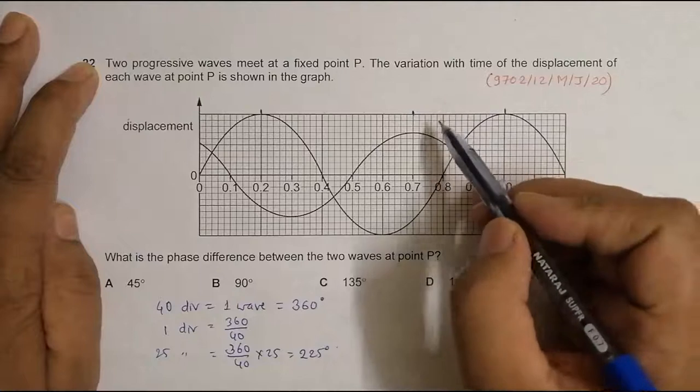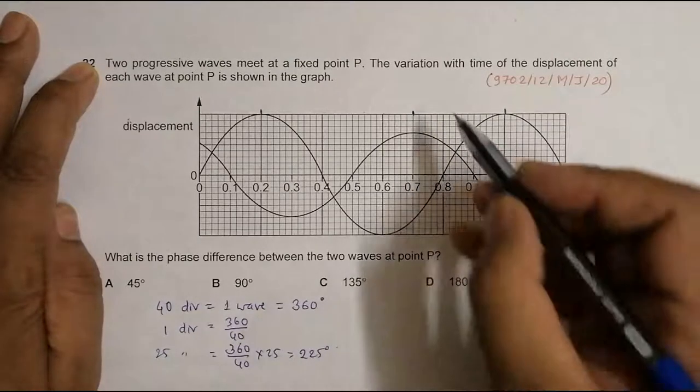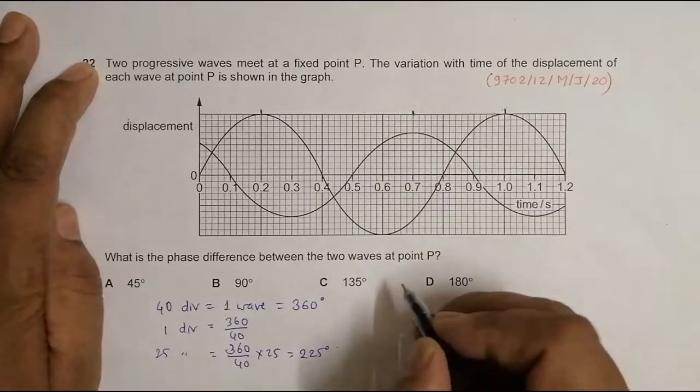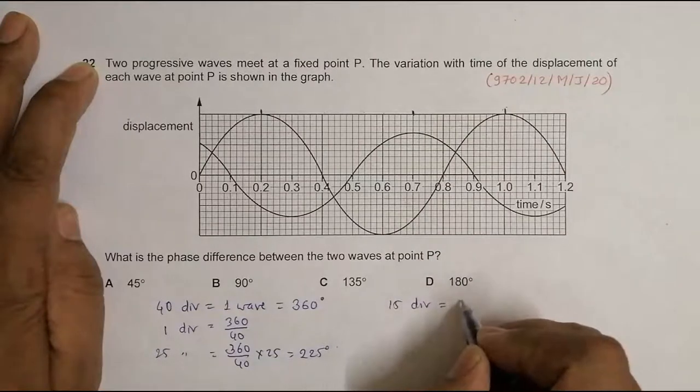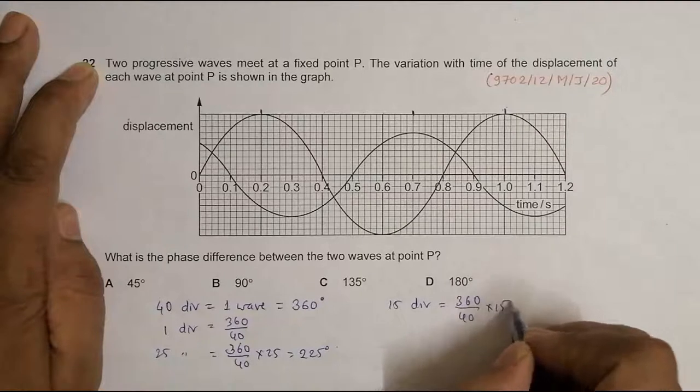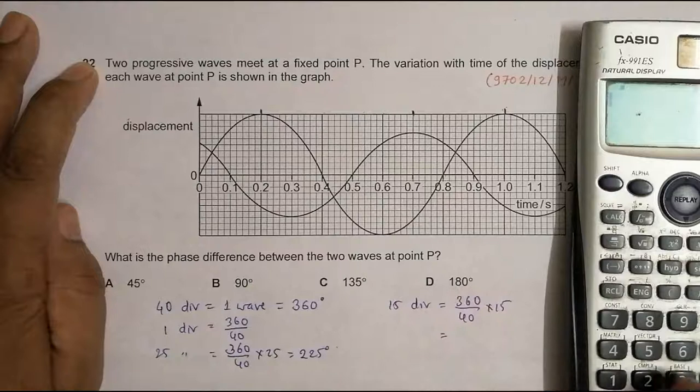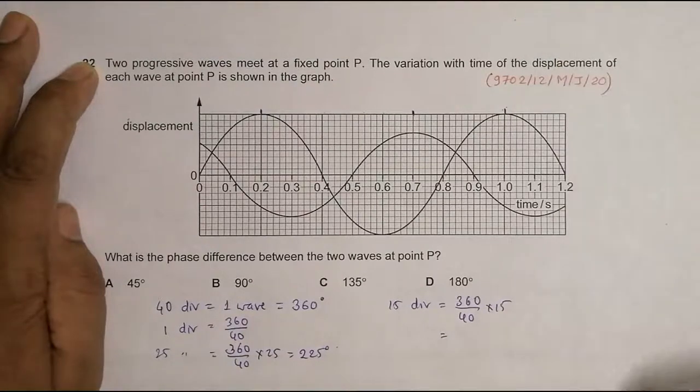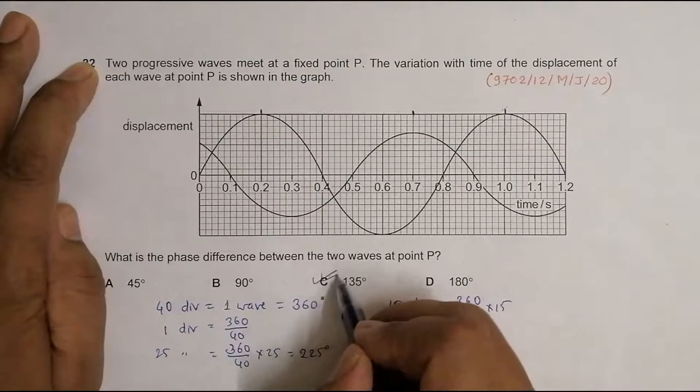Phase difference doesn't mean exactly lead or lag, it could be both. So let's go from here to here, it's also a phase difference, so it's equal to 15 divisions. So 15 divisions should be equal to 360 by 40 into 15, so it should be equal to 9 into 15, which is 135 degrees. So the choice is C.